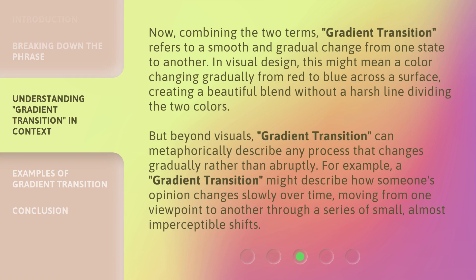Now, combining the two terms, gradient transition refers to a smooth and gradual change from one state to another. In visual design, this might mean a color changing gradually from red to blue across a surface, creating a beautiful blend without a harsh line dividing the two colors. But beyond visuals, gradient transition can metaphorically describe any process that changes gradually rather than abruptly. For example, a gradient transition might describe how someone's opinion changes slowly over time, moving from one viewpoint to another through a series of small, almost imperceptible shifts.